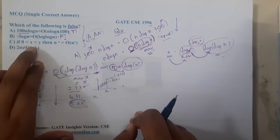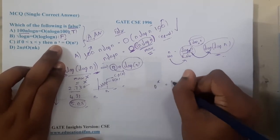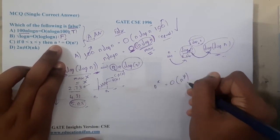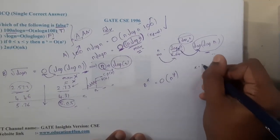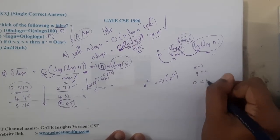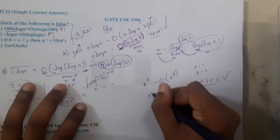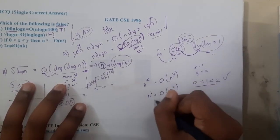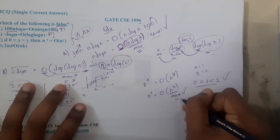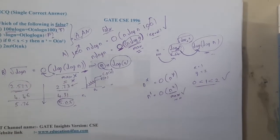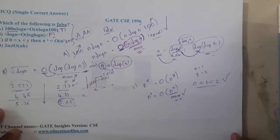Option C states: if 0 < x < y, then n^x = O(n^y). Let x = 1, y = 2. The condition 1 < 2 is satisfied. Then n^1 = O(n^2) — n² is always greater than n, so the maximum case is satisfied. Option C is correct.